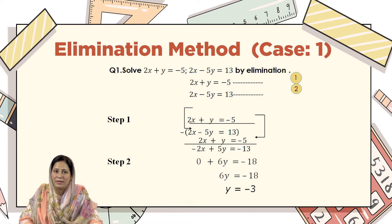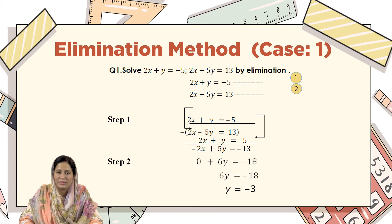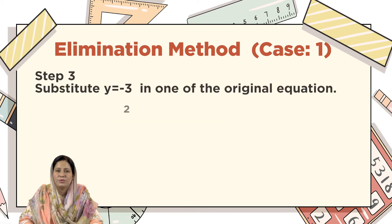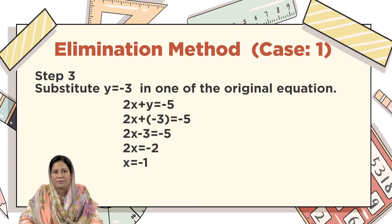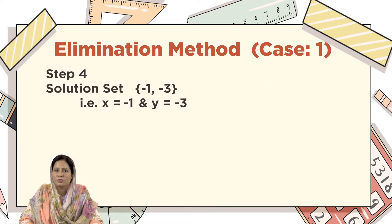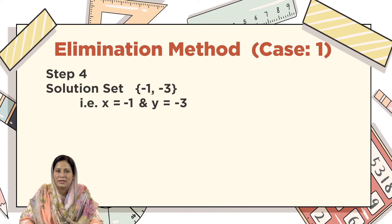In step 3, we will substitute the value y equals minus 3 into any one of the given equations. I am substituting this value into 2x plus y equals minus 5. At the place of y, I have substituted the value minus 3, and after solving it I get the value x equals minus 1. In step 4, we write the solution set in brackets: the first value is x equals minus 1 and the second value is y equals minus 3.